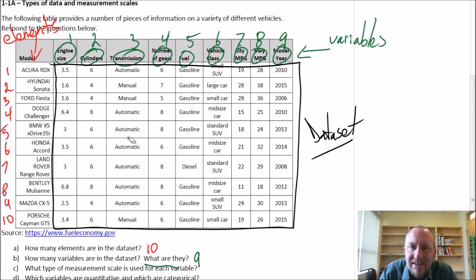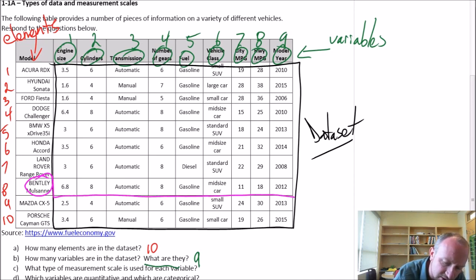So then what is an observation? An observation is the complete set of information for any one element. So if I consider our Bentley. So here's our Bentley, that's the element. And for that element, I have information on all of these variables.